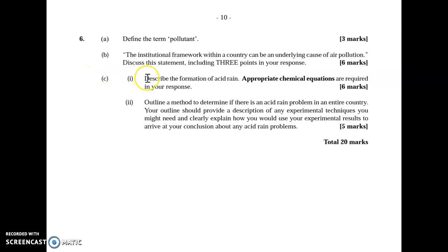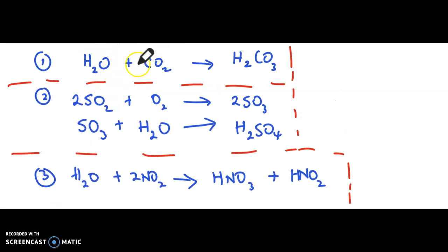Describe the formation of acid rain. Appropriate chemical equations are required in your response. Water plus existing carbon dioxide in the air gives rise to carbonic acid. We have sulfur dioxide plus oxygen naturally in the atmosphere gives sulfur trioxide. That sulfur trioxide interacts with existing water in the atmosphere, which is rainwater, which gives rise to sulfuric acid. Also, water interacting with nitrogen dioxide gives rise to nitric acid as well as nitrous acid. These actual chemical substances exist naturally in the atmosphere when it mixes with rainwater.